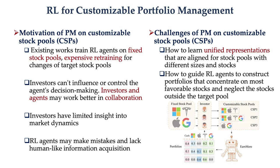To apply RL methods for PM, existing work always trains RL agents to make investment decisions based on a fixed stock pool, which requires retraining with high computational cost when investors need to change their target stock pools. Furthermore, investors are unable to engage in or influence the agent's decision-making process, as it is uncontrollable for them.